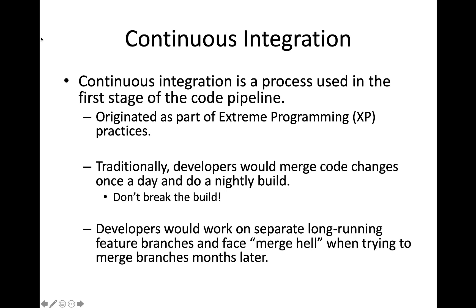When you're building out a software pipeline, the first stage of that pipeline is really important because your code enters the pipeline and then it will be promoted through various stages and ultimately into a production environment. In a DevOps organization, oftentimes we use a process called continuous integration in order to push our code into the code pipeline.